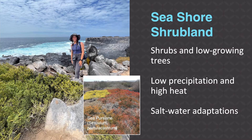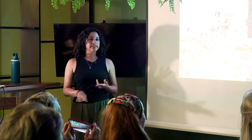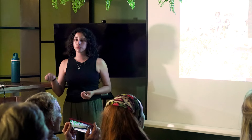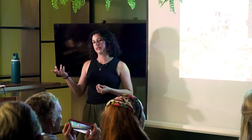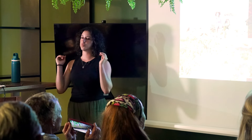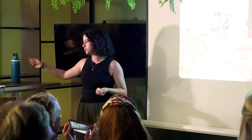The next main ecosystem is the seashore shrubland. One indicator species is sea purslane, Sesuvium portulacastrum. The seashore shrubland includes many shrubs and low-growing trees. There is low precipitation and high heat in this area — still very close to the Galapagos mangrove coastal zone — and plants still include salt water adaptations because winds bring salt air from the ocean.